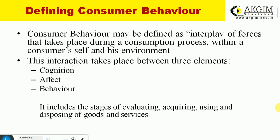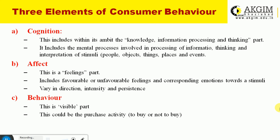Consumer behavior includes interaction among three important elements: cognition, affect, and behavior. It also includes the stages of evaluating, acquiring, using, and disposing of goods and services. Cognition includes the knowledge the consumer processes — this is the information processing or thinking part, which is invisible to marketers. It includes the mental processes involved in processing information, thinking, and interpretation of stimuli — people, objects, places, events, products, brands, and pricing.